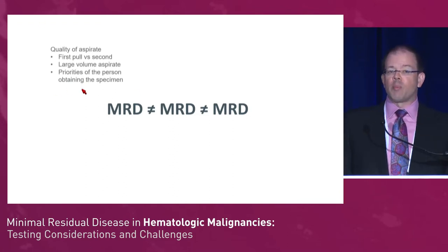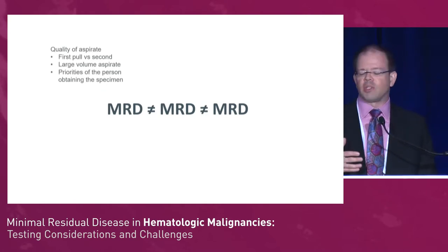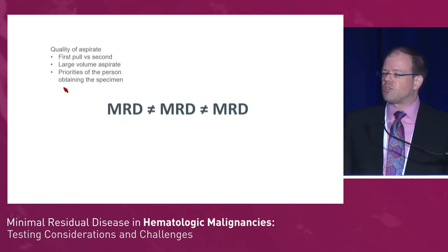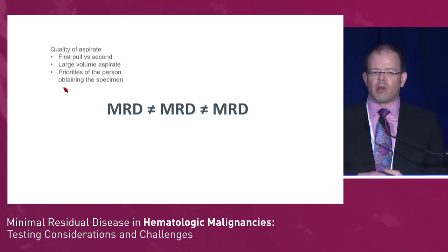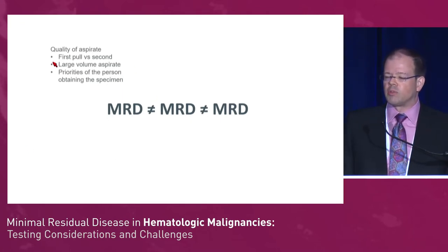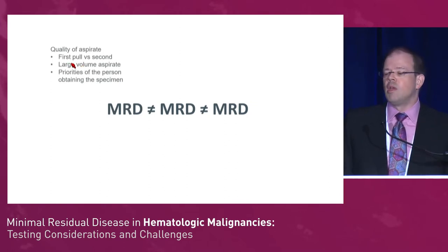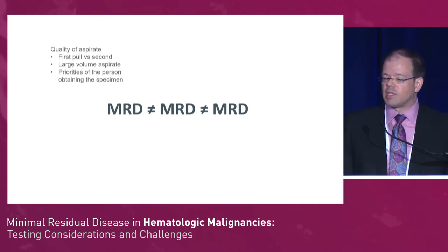First, the quality of the bone marrow aspirate is very important. There are a lot of demands on bone marrow aspirates these days including clinical and research studies. It's not suitable to take 30 mLs of bone marrow aspirate and send a couple of milliliters for MRD assessment because it will be hemodilute. For an accurate MRD assessment, it's important to take just the first couple of milliliters and segregate that out for MRD, not do a large volume pool.